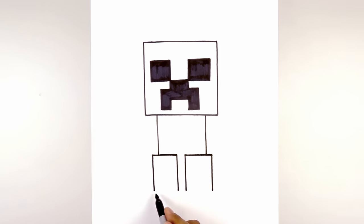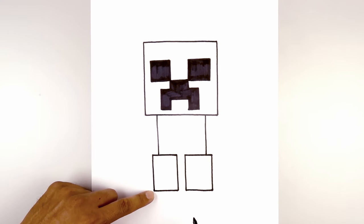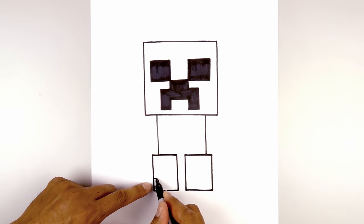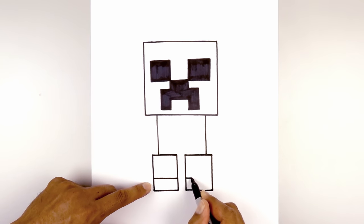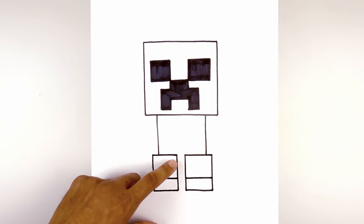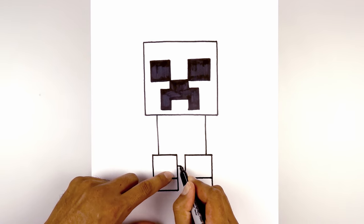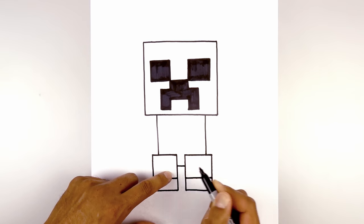Now we're going to close out the bottom of the feet with a straight line. From the bottom of the feet, we're going to step up and draw another straight line going across for the edge of the foot. And then from the top of the legs, we're going to step down and draw a straight line going across for the lower part of the body.